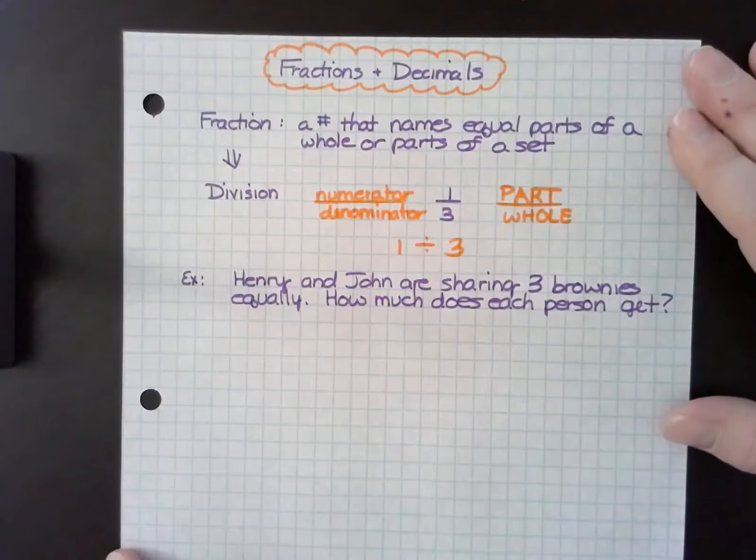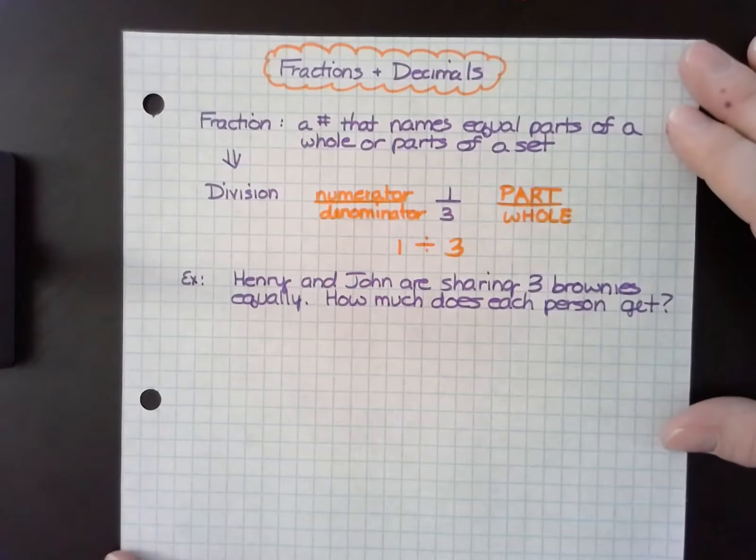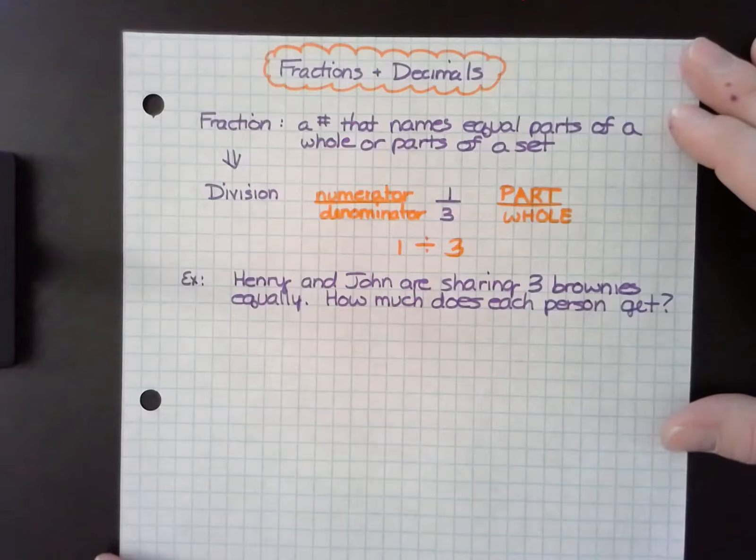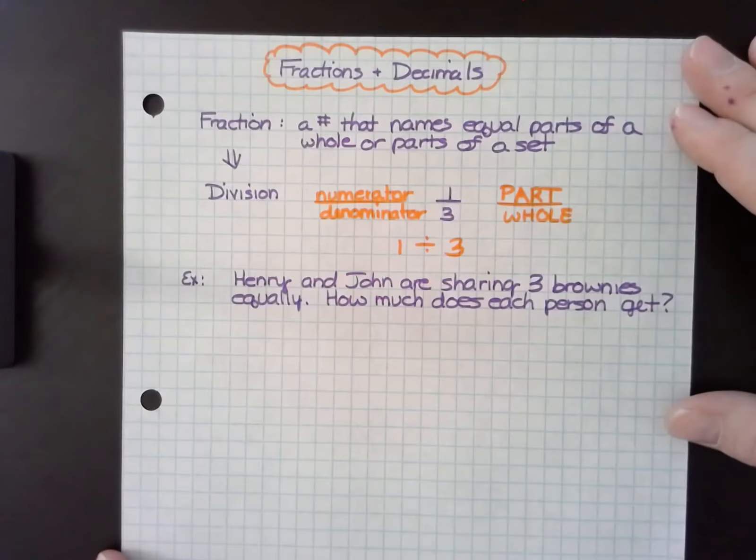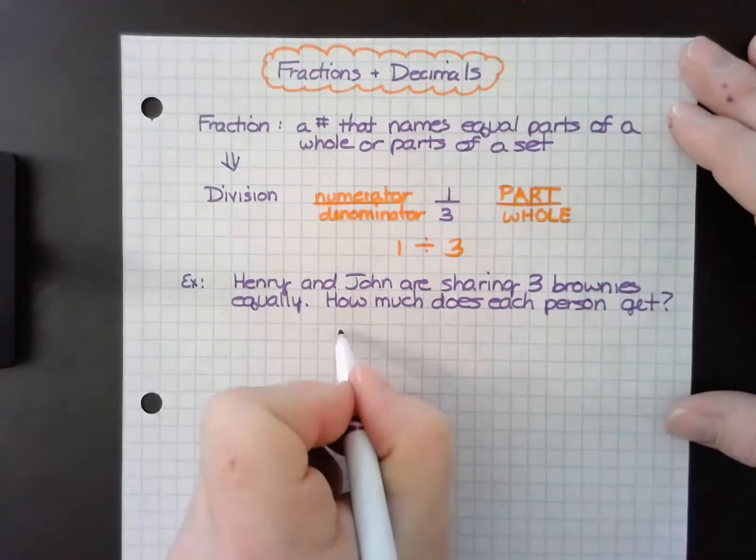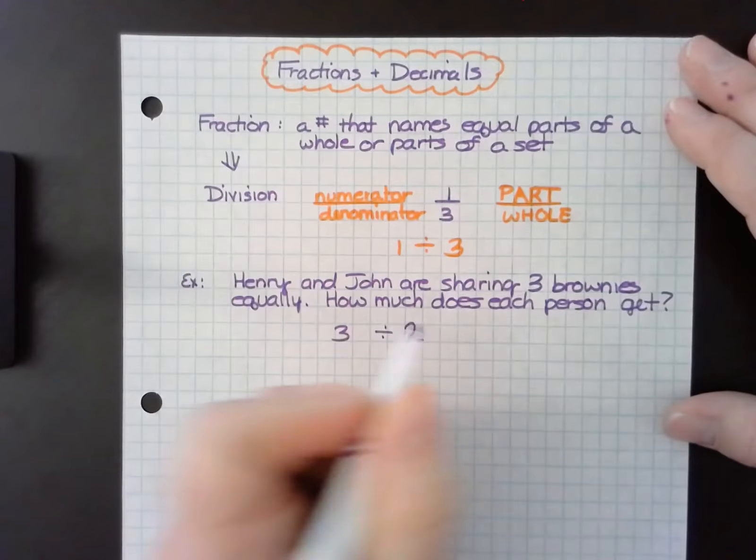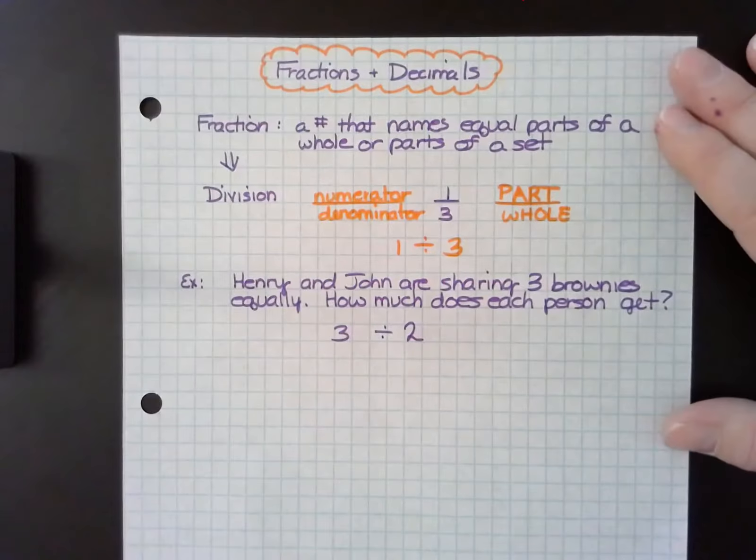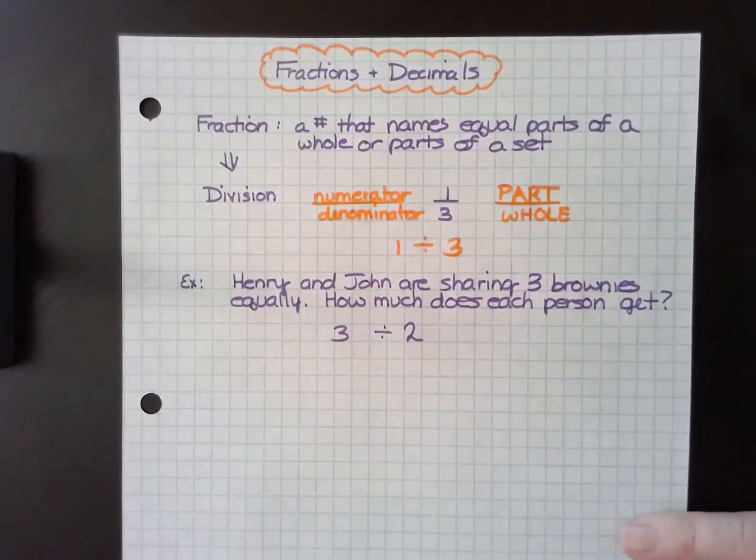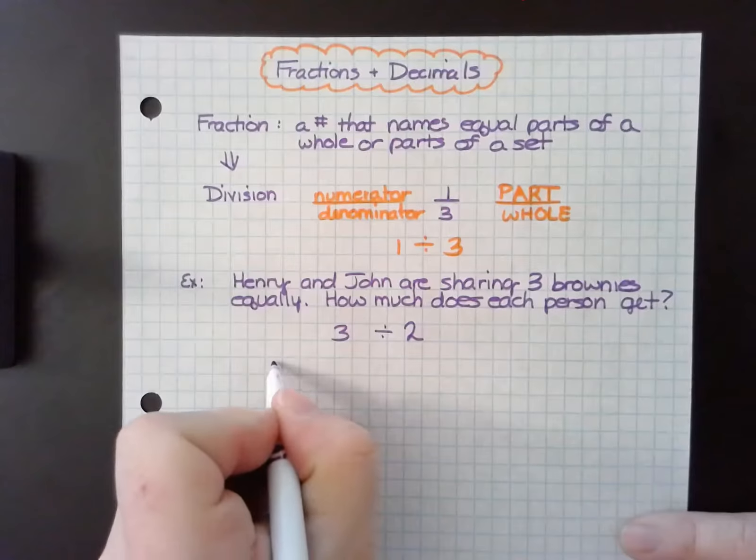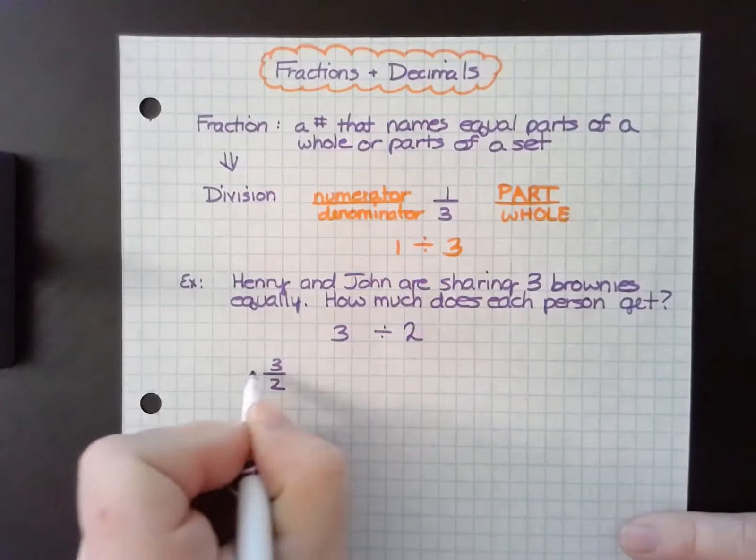So we have to think about, in this case, that the denominator may actually be the smaller number. So if we have three total brownies and I'm going to have to divide that three brownies by two people, then each person gets three halves of a brownie.